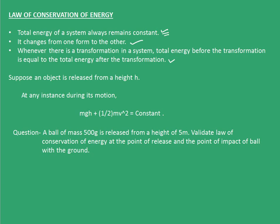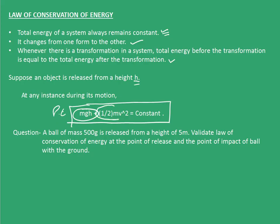Now, suppose an object is released from a height h. At any instant during this motion, we have mgh plus half mv² equal to a constant. Here, the first term mgh is the potential energy term, and the second term ½mv² is the kinetic energy term. So, potential energy plus kinetic energy remains constant.